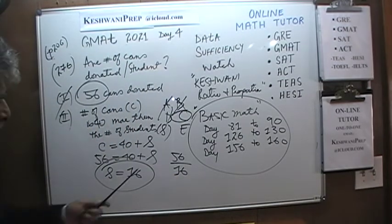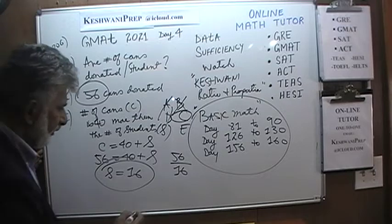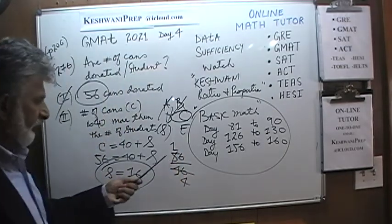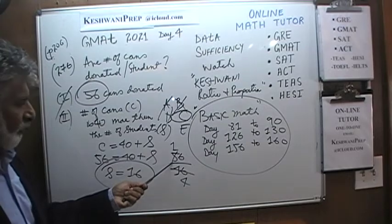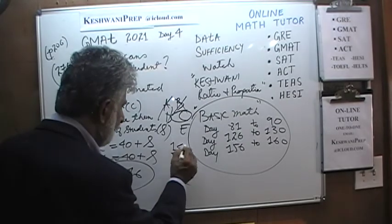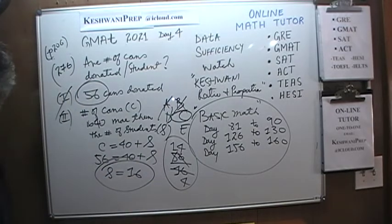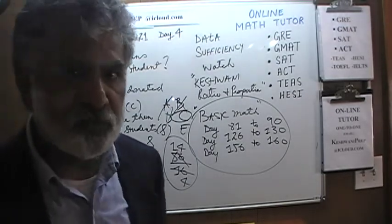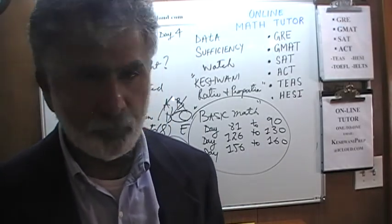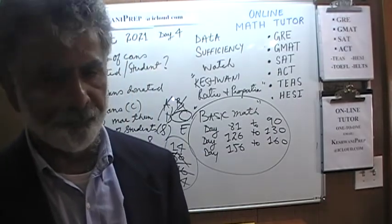We'd compute 56 divided by 16 — we can divide both by 4 to simplify. But again, all this extra work takes extra seconds, and those seconds add up to minutes. Do not do any unnecessary work in the exam.